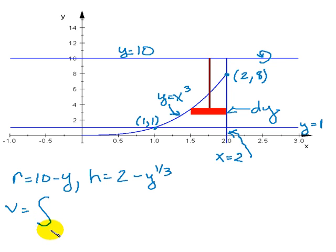Radius is 10 minus y and the height is 2 minus y to the 1 third power or the cube root.